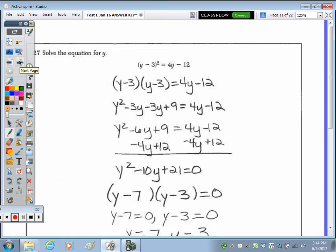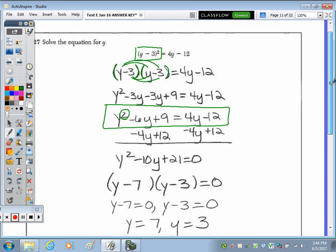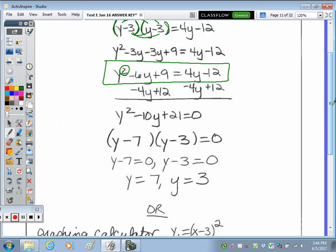Number 27. Solve the equation for Y. When solving the equation, the first thing you want to do is square this binomial. So expand, write it out twice, do your full distribution. And then we can focus on, once we remove those parentheses, solving this equation. And because of the quadratic, it's a degree 2, we want it set equal to 0.